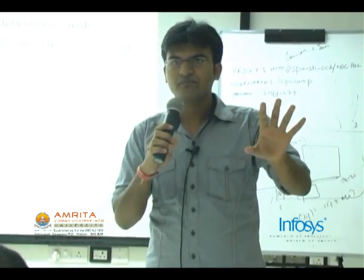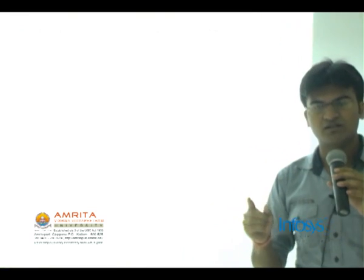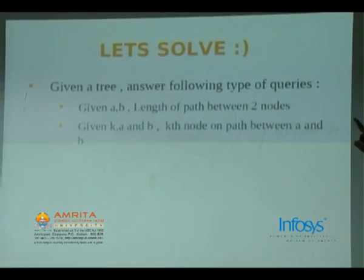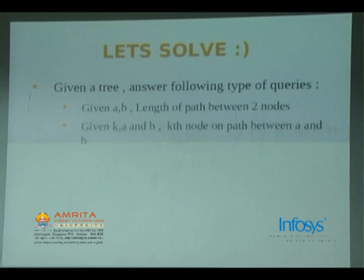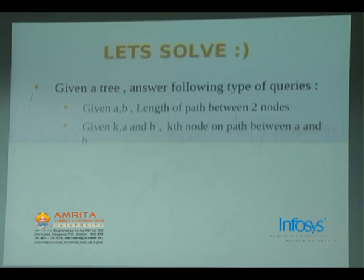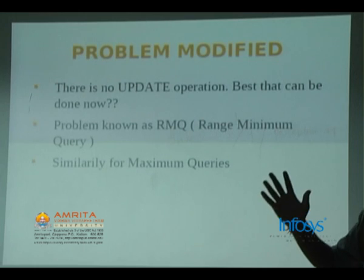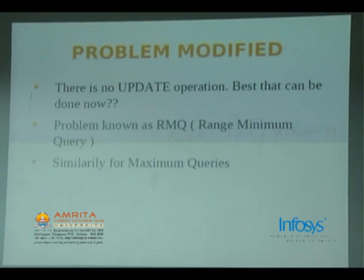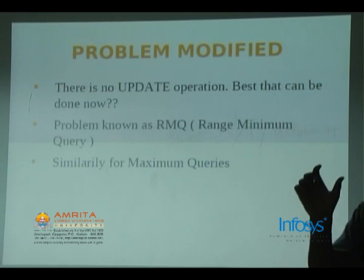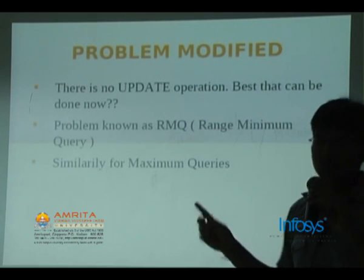You are aware that between two nodes there is one and only one path in a tree. So you have to report the length of the path given a and b. Or if given k, a, and b, report the k-th node on the path between a and b starting from a. Assume 10^5 nodes and up to 10,000 queries. For each query you are given i and j and must report the minimum in the subarray between i and j. This problem is known as RMQ — Range Minimum Query.